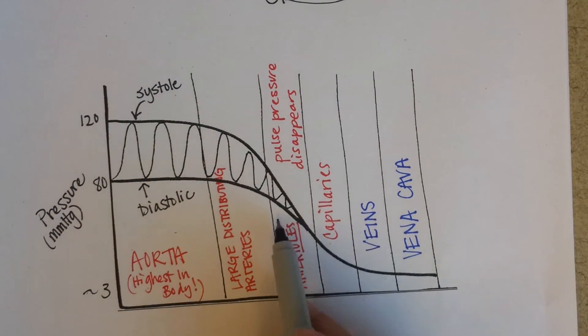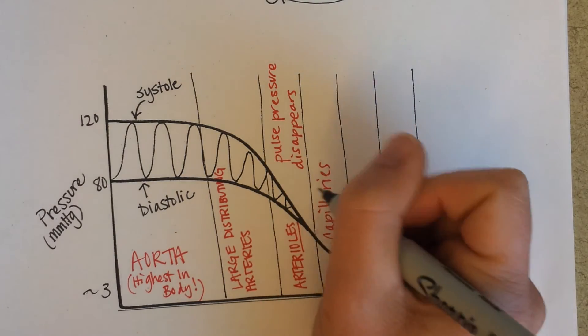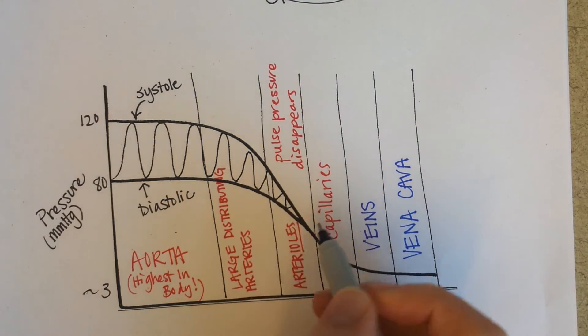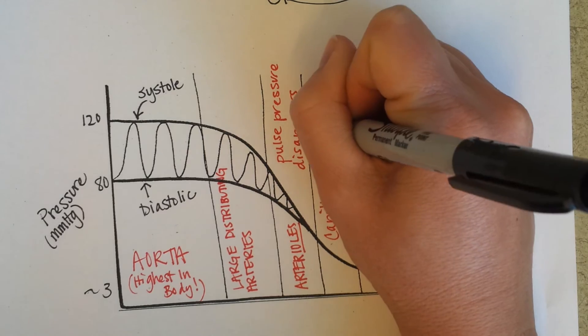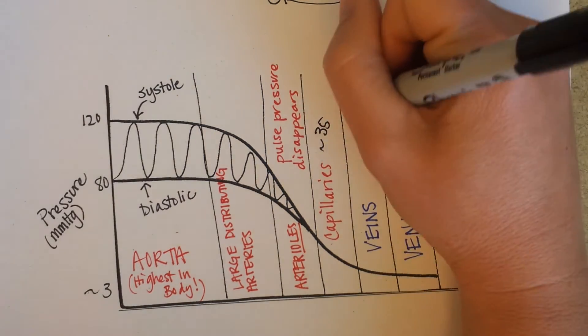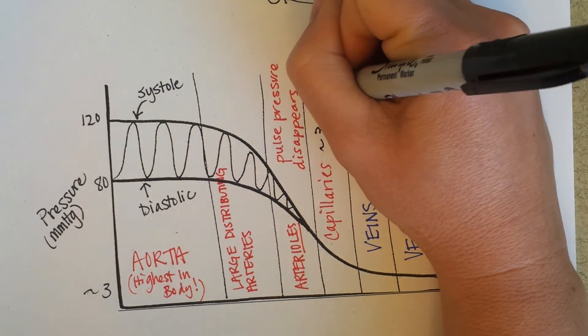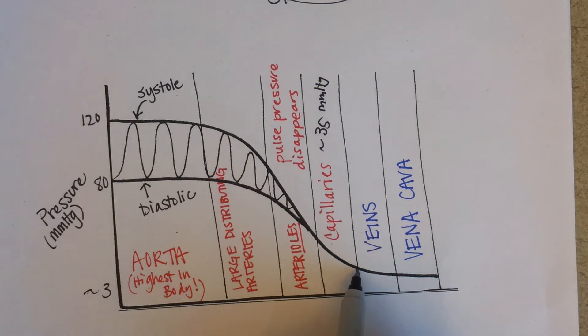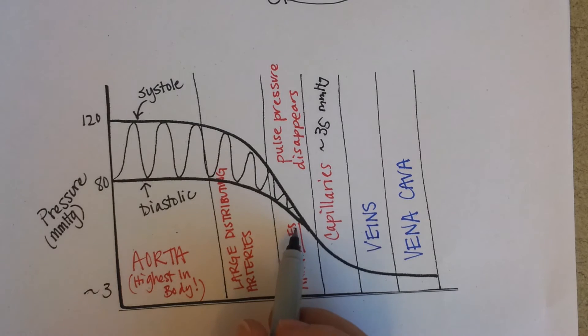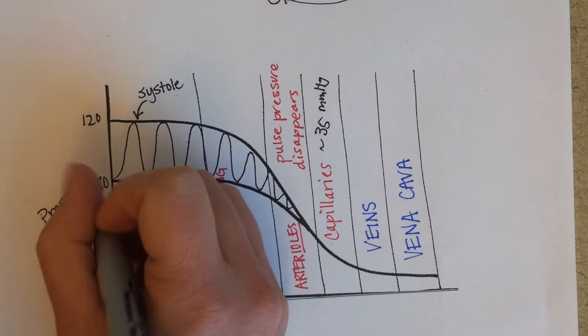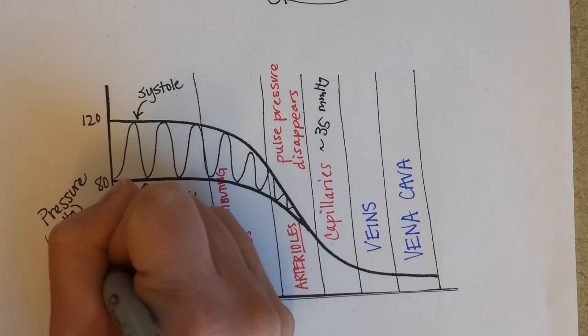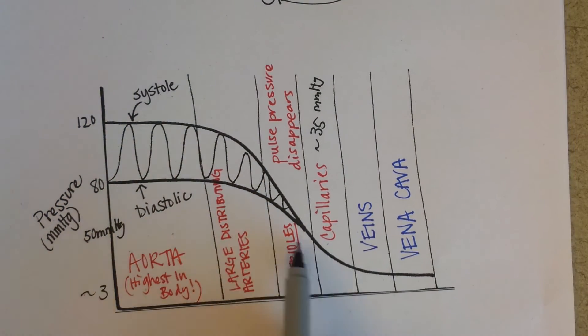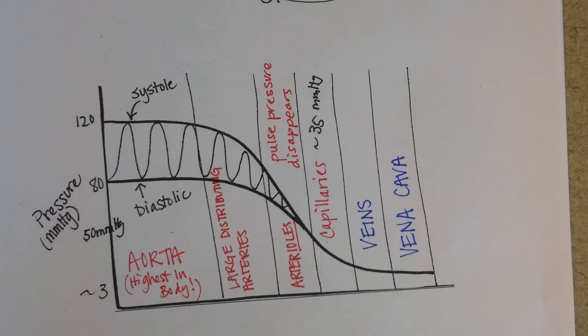And the arterioles, they typically start, I don't know, I guess my picture is not really great on that. But the capillaries are usually going to be about 35 millimeters of mercury. And maybe about 15 by the time you get to the end of the capillaries. The arterioles are going to be somewhere around 50 millimeters of mercury. And so we just see the steady drop as we go through the blood system.